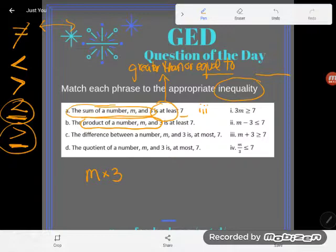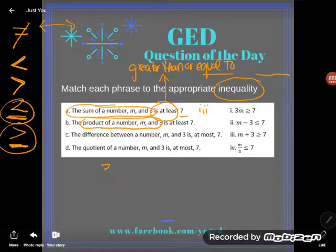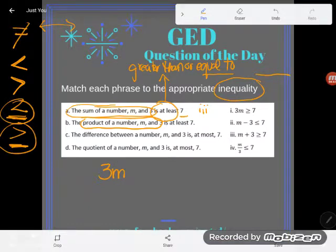And how mathematicians will do multiplication instead is they will use proximity. They will just put things really close together. They will put the number first, 3, and shove the variable, the letter after it, 3M.